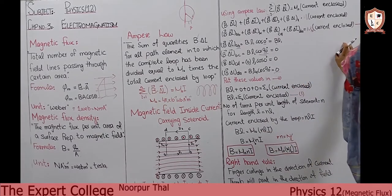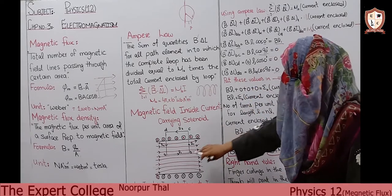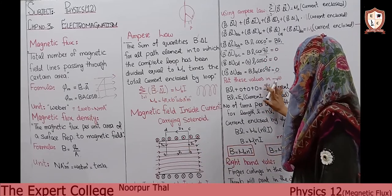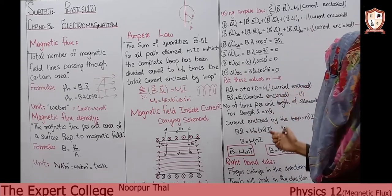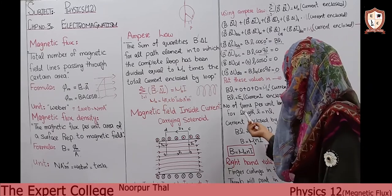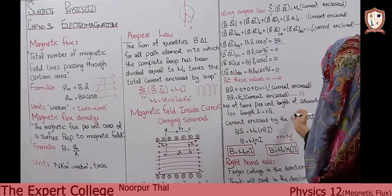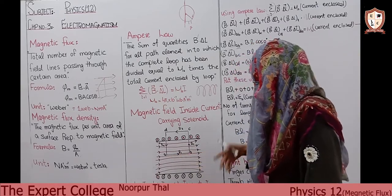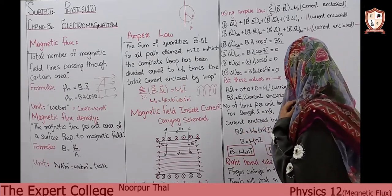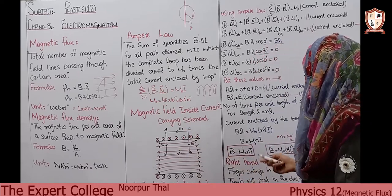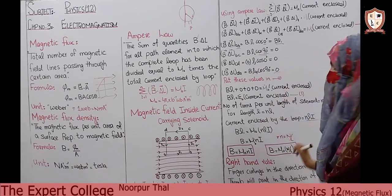Substituting into equation number one: B·L1 + 0 + 0 + 0 = μ₀ × current enclosed. Now we find the current enclosed by the loop. If n is the number of turns per unit length of the solenoid, then for length L1 the number of turns is n·L1. So the current enclosed is equal to n·L1·I.